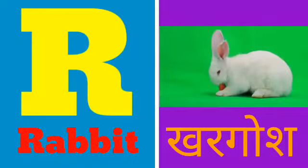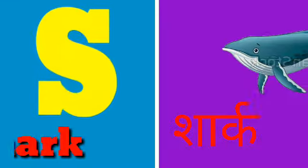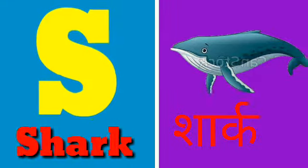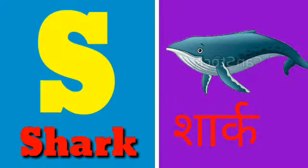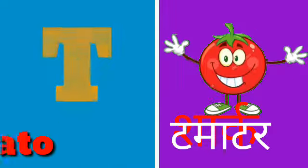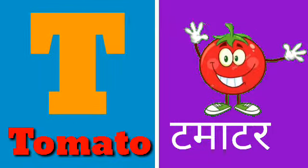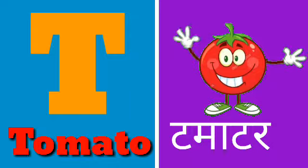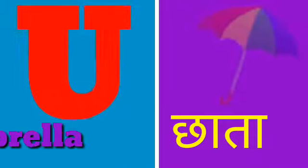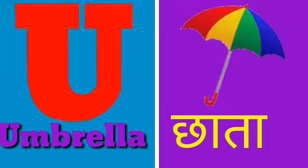R for rabbit, rabbit means khargosh. S for shark, shark means shark. T for tomato, tomato means tomato.